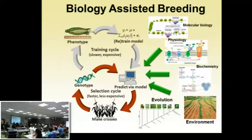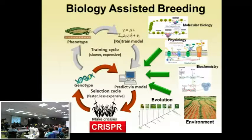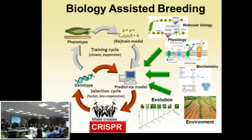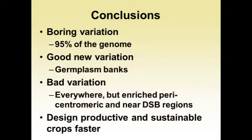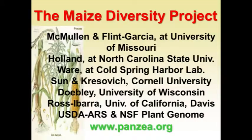If we can get CRISPR and genome editing to work at the efficiencies people believe it can, we're working towards a world where we'll have a list of the 50, 100, or 1,000 base pairs across the genome that really need to be modified to take what looks like an adapted inbred line and make it a much more vigorous inbred line for breeding. The boring variation — about 95% of the genome — the good stuff, you have it in germplasm banks. The bad variation is pretty much everywhere, but certainly enriched in some of these regions.